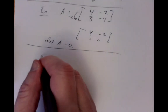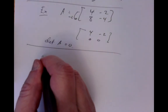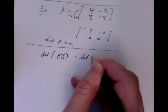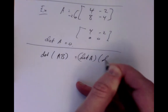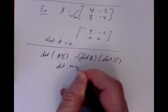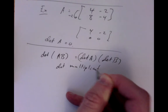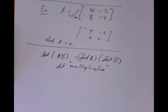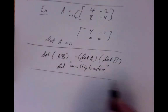A much deeper property, which we won't prove, is that the determinant of a product of two square matrices is the product of the determinants of the individual matrices — the determinant is multiplicative. It is not additive at all. Determinant behaves very badly under addition, but multiplications behave very well.